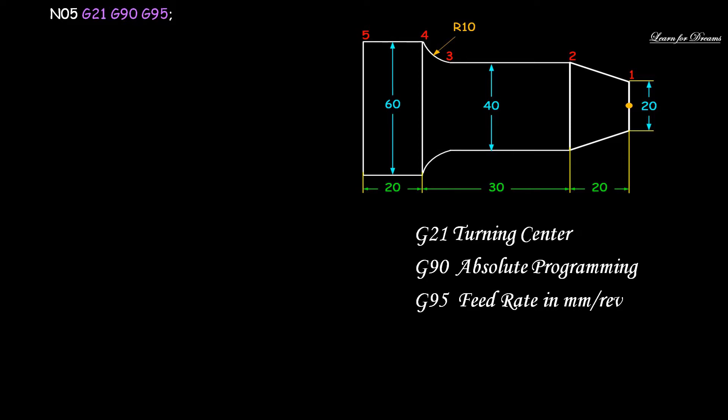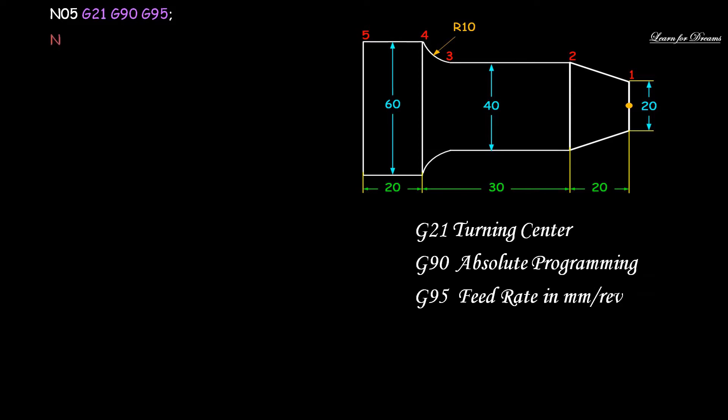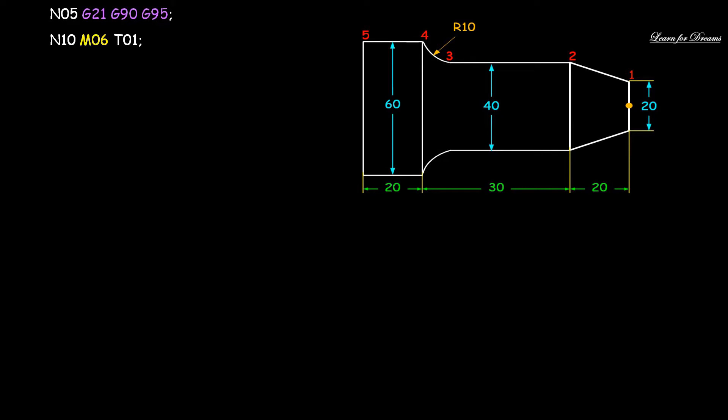Next line is N10 M06 T01. Here M06 is tool change and T01 is tool number. N15 M03 S1200. M03 is spindle on in clockwise direction and S1200 is spindle speed in RPM.